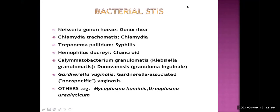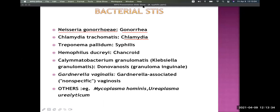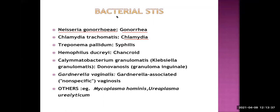Among the bacterial STIs: gonorrhea is caused by Neisseria gonorrhoeae, a gram-negative diplococci. Chlamydia is caused by Chlamydia trachomatis bacteria. Chlamydia trachomatis can lead to many other types of diseases in our body — the name trachomatis comes from trachoma, an eye infection it causes. It also causes urinary tract infection and sexually transmitted infection. These diseases are caused by different serotypes.